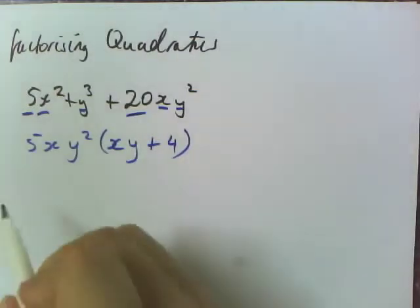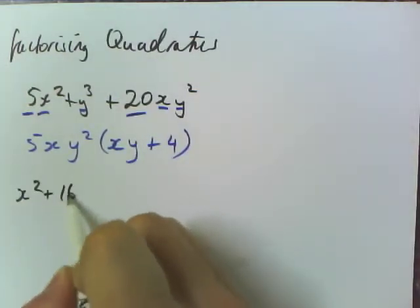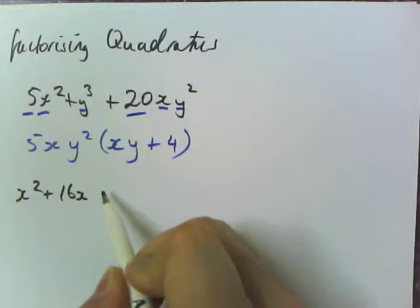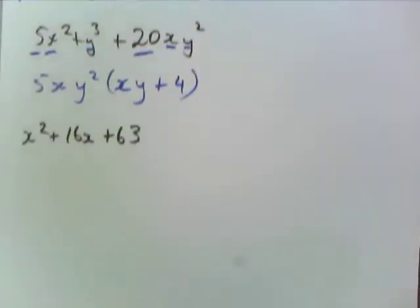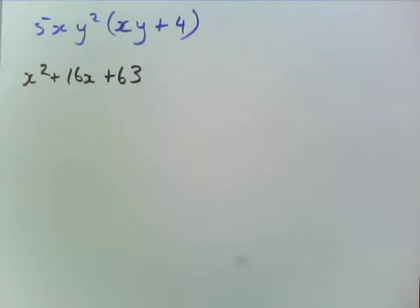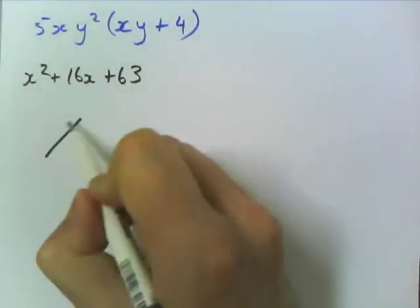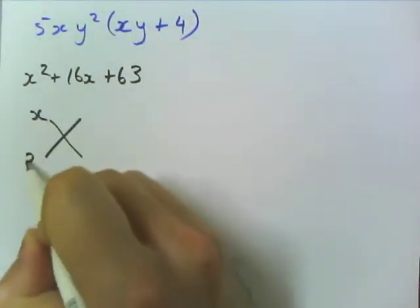If you're going to factorise a quadratic, so x squared plus 16x plus 63, this one here is a quadratic. It's also one of the ones where it's almost easy to do, and I say almost. Now I have a very particular way of doing this. Some people like this way, some people don't.